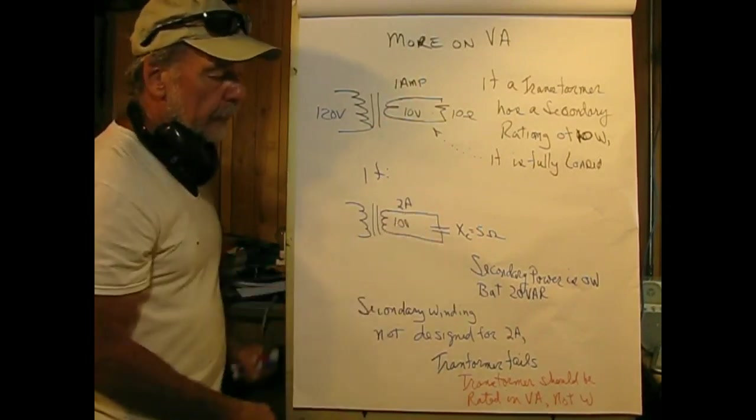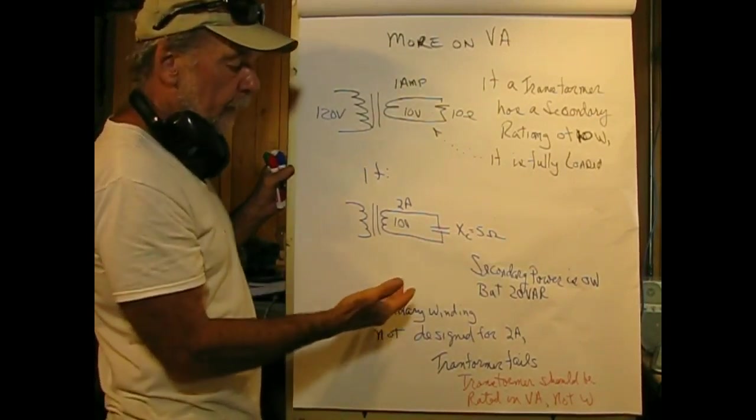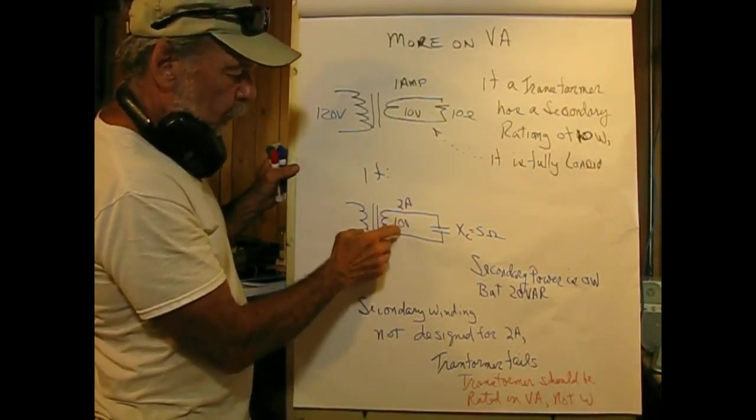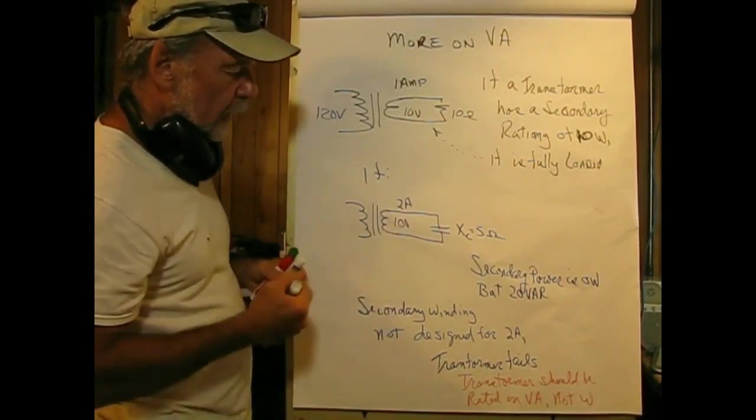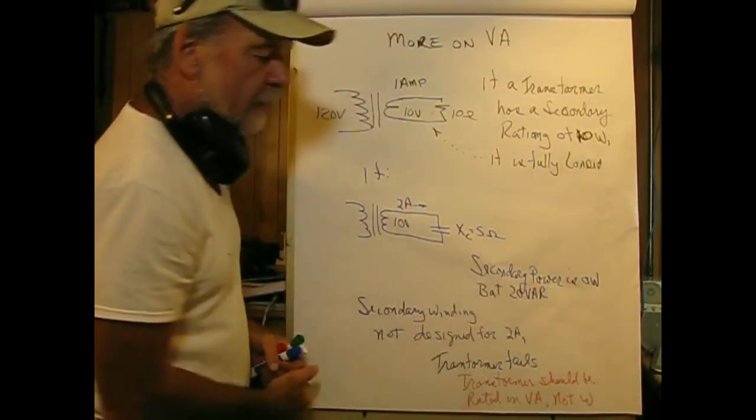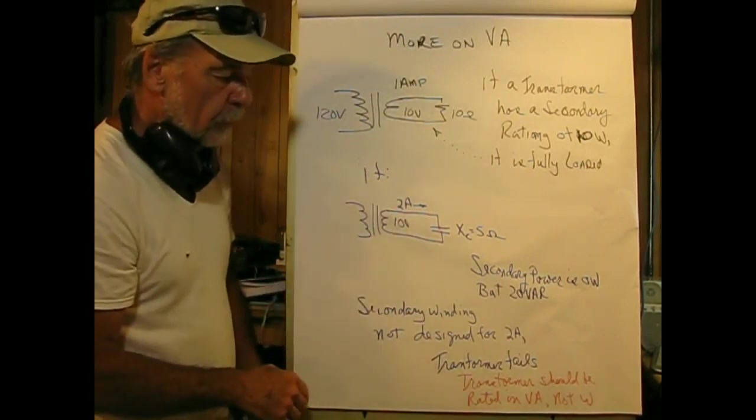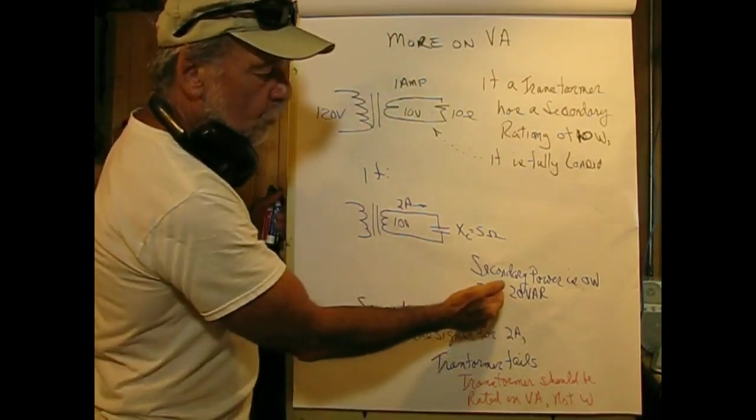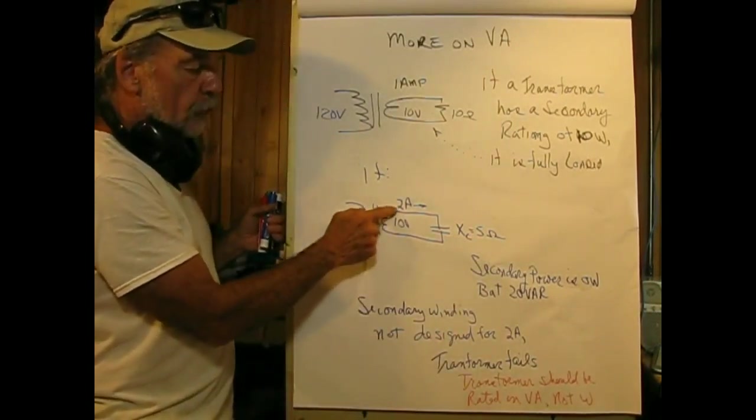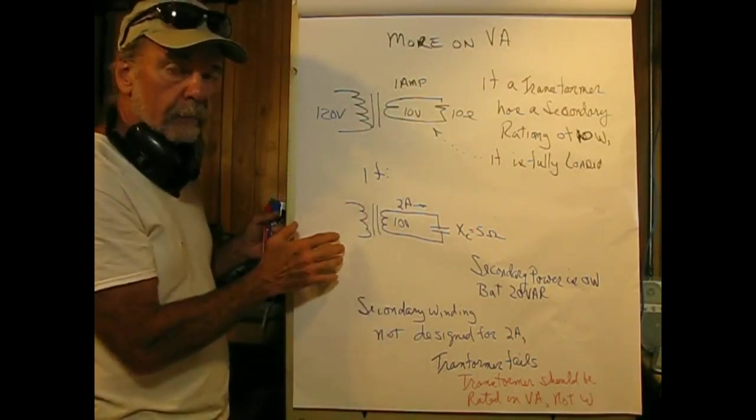Now let us put a capacitor in here, and let the capacitor reactance be equal to 5 ohms. Under this circumstance, we have 10 volts divided by 5 ohms gives us 2 amperes flowing in the circuit. Note this: the secondary power is 0 watts. It's not dissipating anything. However, 2 amperes is still flowing. The secondary is basically 20 VAR. What we have here is the secondary winding is carrying 2 amperes, but it was designed for 1 ampere. Eventually, the transformer is going to fail.